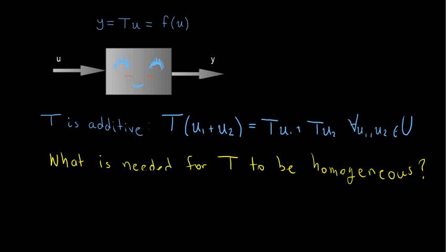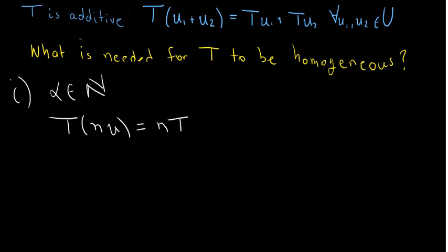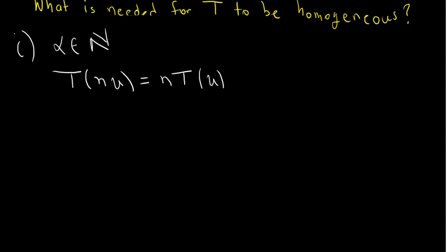First we demonstrate for the case of α in the set of natural numbers. We're going to use the principle of mathematical induction, assuming that for some natural number n, the relation T(n·u) = n·T(u) holds for any arbitrary input u. We observe that this is fulfilled for n equal to one, which is the minimum natural number in this case.